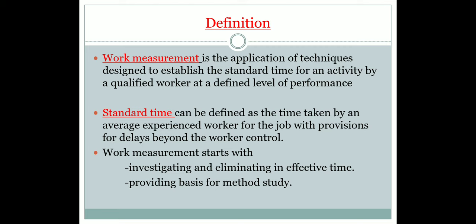What are the objectives of work measurement? First is comparing alternative methods. Second is assessing correct initial planning and control. Third is realistic costing and cost reduction and cost control. Fourth is identifying standard workers — we have to use skilled workers. Fifth is training new employees.